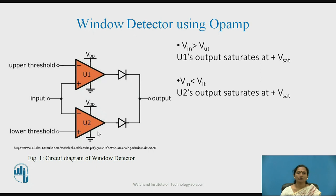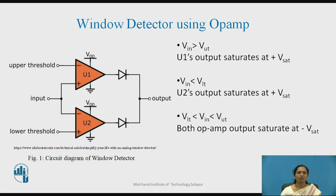In the other case, when input voltage is less than VLT, OPAMP U2 gives positive saturation at the output. So in either case, diode D1 or diode D2 will be forward biased, and these two diodes act as an OR gate. When input voltage is within the range of upper and lower threshold values, both OPAMPs' outputs will saturate to minus V sat. Therefore both diodes will not be forward biased, and output voltage will be zero.